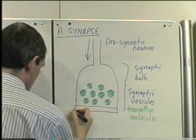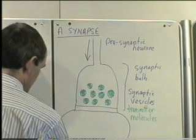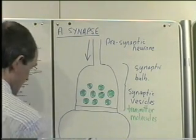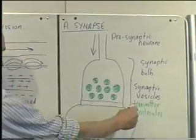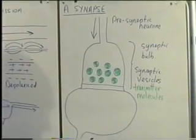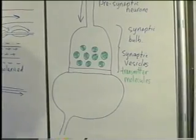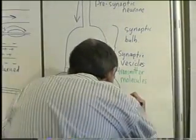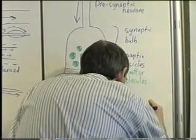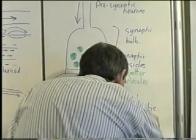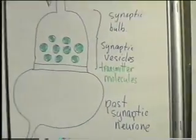So let's draw this as another neuron here. It will have an axon probably leading away from it. And we'll refer to this as the neuron after the synapse. So we'll refer to this as the post-synaptic neuron.